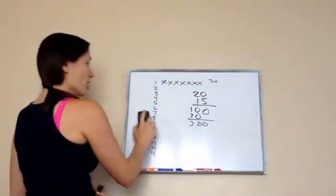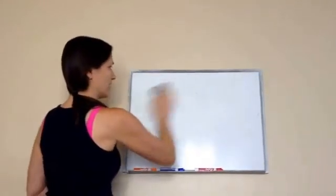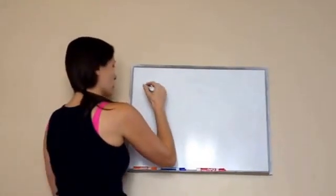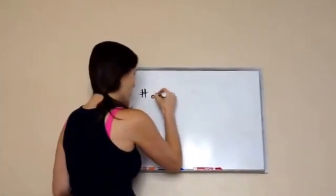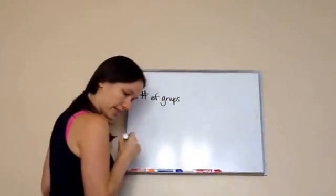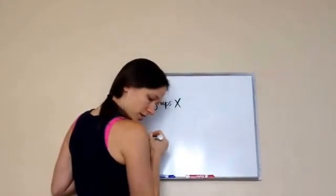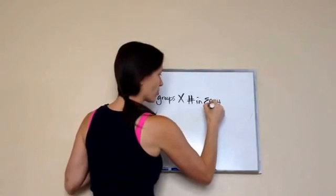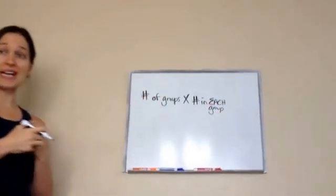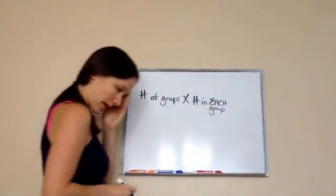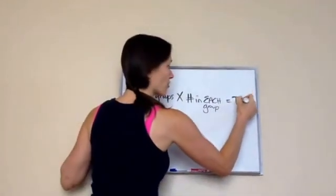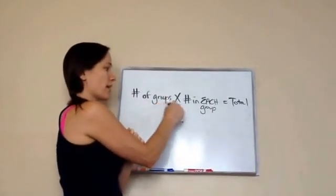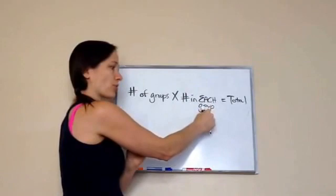That's just one of the things. Now, when we're filling out this, I want to show you something. There's always going to be something called the number of groups — you might want to write this down — times the number in each group. That's a very important word: each. Equals total. That's the equation we're working with: the number of groups times the number in each group equals the total.